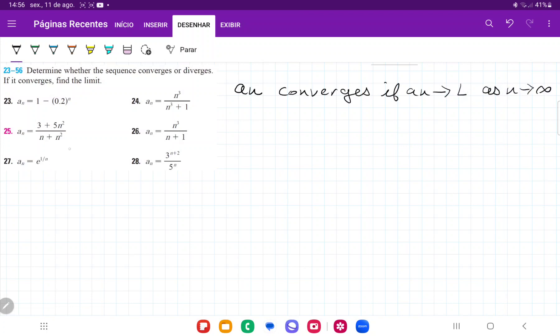So what we're going to do here to determine whether 27 converges is we're going to try to take the limit as n approaches infinity of e to the 1 over n and see if this gives us a specific number. So what we're going to do here is we're just going to apply the limit to the exponent of e. We're going to say the limit as n approaches infinity of 1 over n.